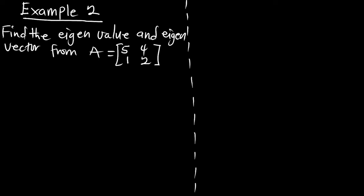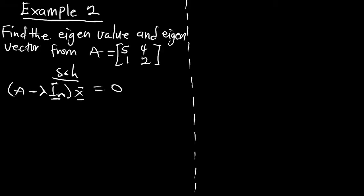In this episode we are going to solve this example which says we should find the eigenvalue and eigenvector for the matrix A = [[5,4],[1,2]]. From the previous episode we saw the relation: A minus lambda I_n multiplying the eigenvector should be equal to zero, where A is the matrix, lambda is the eigenvalue, I_n is the 2x2 identity matrix, and this is the eigenvector.